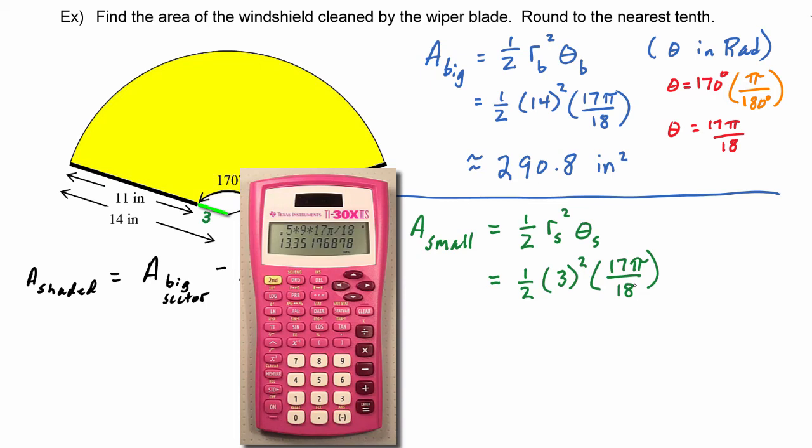And we see if we round to the tenths place that the area of the small sector is about 13.4 square inches.